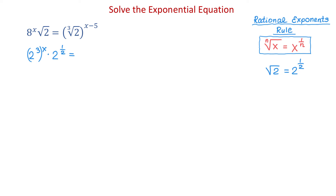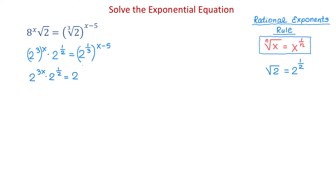On the right side, we have another radical where the exponent of 2 is 1 and the index is 3. Therefore, we can write this as 2 to the power of 1 over 3. Then we will close the parenthesis and raise to the x minus 5. In the next step, we will apply the power rule, which allows us to multiply 3 and x and 1 third by x minus 5. Then we will have 2 to the 3x times 2 to the 1 half equals 2 to the 1 third multiplied by x minus 5.